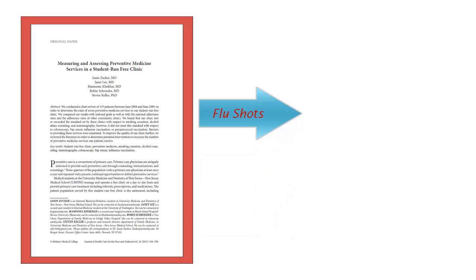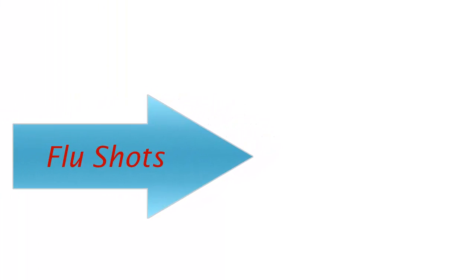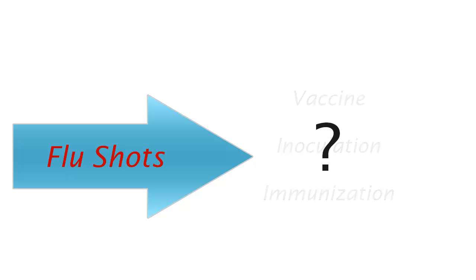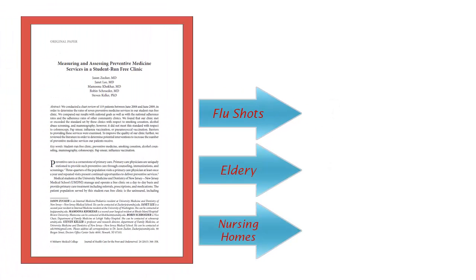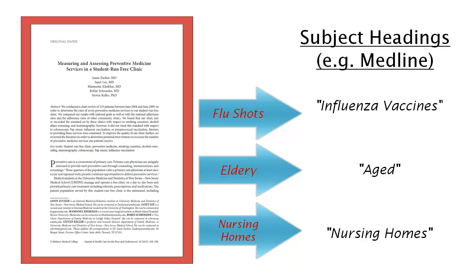A common problem that arises when assigning these concept terms is that human language allows for numerous ways to express the same concept. An article that discusses flu shots, for example, could be assigned any number of terms, including flu vaccines, inoculation, or immunization. To overcome this, databases generally accept a single definitive term for representing a given concept — this is called a subject heading. In the MEDLINE database, for example, all articles about flu shots will be assigned the subject heading 'Influenza Vaccines.'